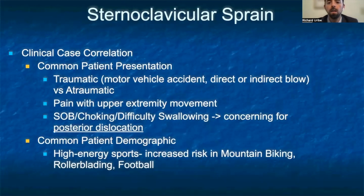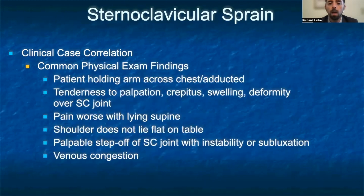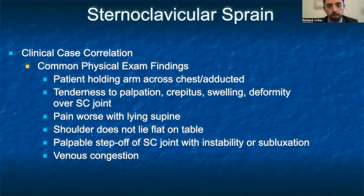The last condition we'll review is the sternoclavicular sprain. Patients often have pain with movement of their upper extremity. If you notice any signs of shortness of breath, choking, or difficulty swallowing, it should lead you to be concerned for posterior dislocation of the clavicle. On physical exam, you may note the patient holding their arm across their chest or close to their body. Over the sternoclavicular joint, you may note tenderness to palpation, crepitus, swelling, and deformity. The pain may be worse with lying supine, and you may also note that the shoulder does not lie flat on the table. On palpation, there may be a palpable step-off over the sternoclavicular joint with instability or subluxation. If there is posterior dislocation, there may be venous congestion.